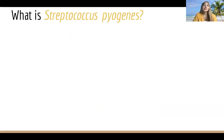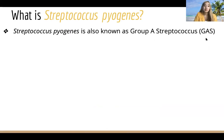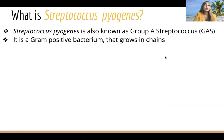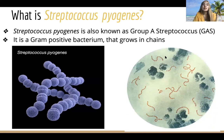So what is Streptococcus pyogenes? Streptococcus pyogenes is also known as Group A Streptococcus, or GAS for short. It is a gram-positive bacteria. This is a 3D model of how it looks, and this is a picture under the microscope.